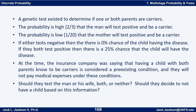This was quite a few years ago and genetic testing was a pretty new thing at the time. The insurance company was saying that having a child when you knew both parents were carriers was considered a pre-existing condition and they would not cover medical expenses. So the question was: should they test the man, his wife, both, or neither? Should they decide to have the child or not based on this information? They decided not to test, went ahead and had a child, and the child was free of the disease.